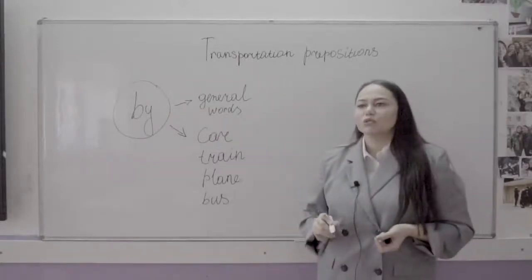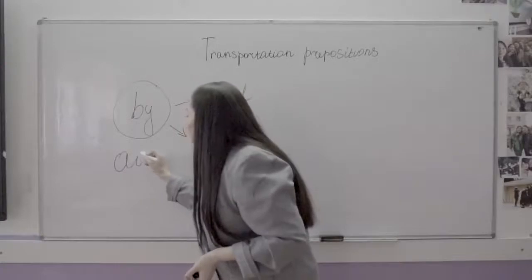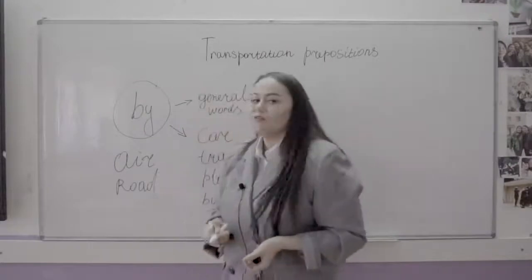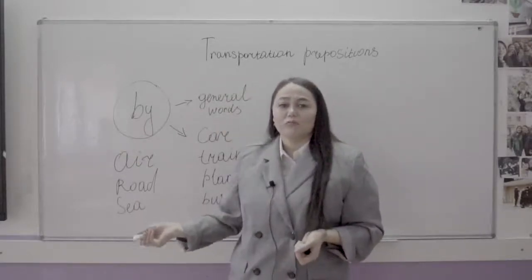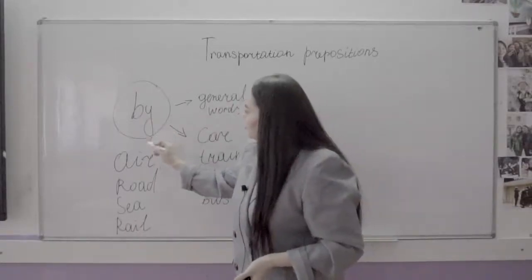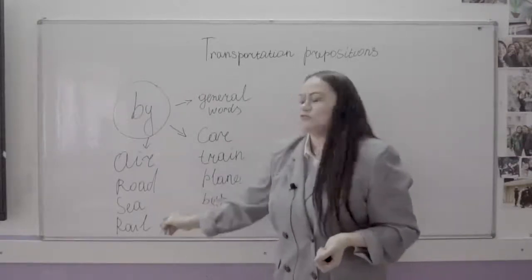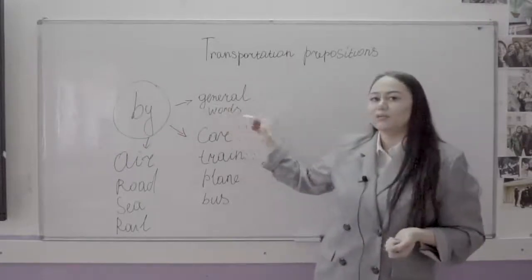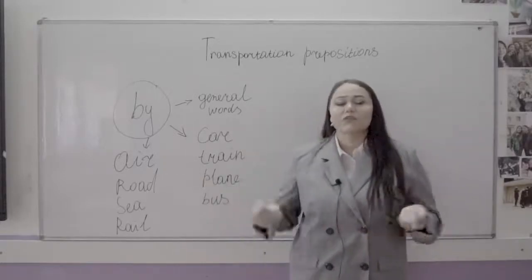Thirdly, we can also say: I travel by air, I travel by road, I travel by sea, and even I travel by rail. All of them are transportation environments or services. So here are the three uses of the preposition 'by': general meaning, types of vehicles, and types of environments.